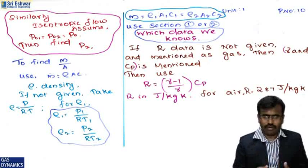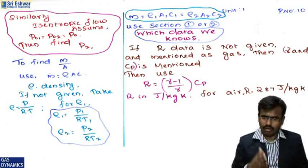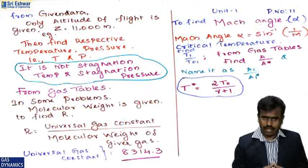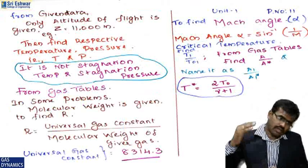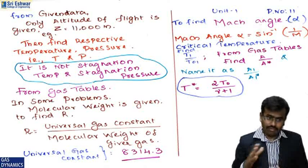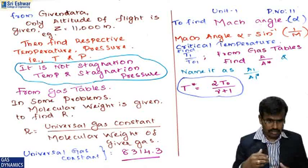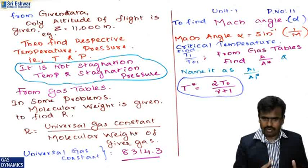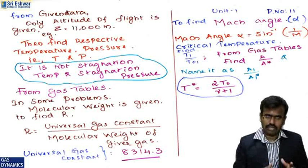If R (the gas constant) is not given, it can be found from R = [(γ−1)/γ]·cₚ, in units of J/kg·K. For air, take R = 287 J/kg·K. In problems involving altitude (e.g., 10,000 or 11,000 meters with a jet engine), pressure and temperature can be found from gas tables. If molecular weight is given instead of R, use R = universal gas constant / molecular weight, where the universal gas constant is 8314.3 J/kmol·K.